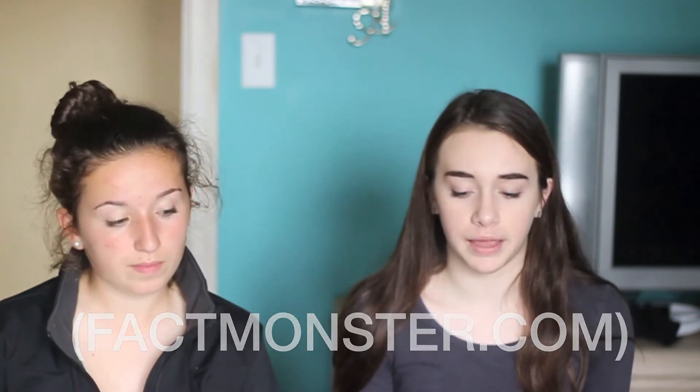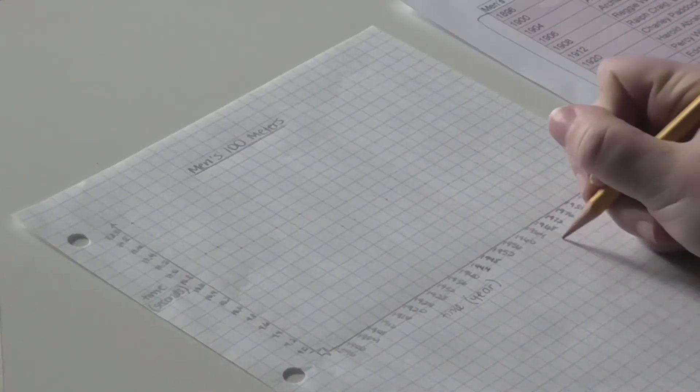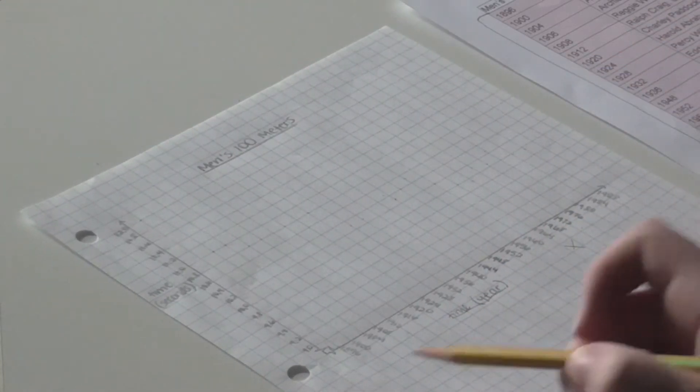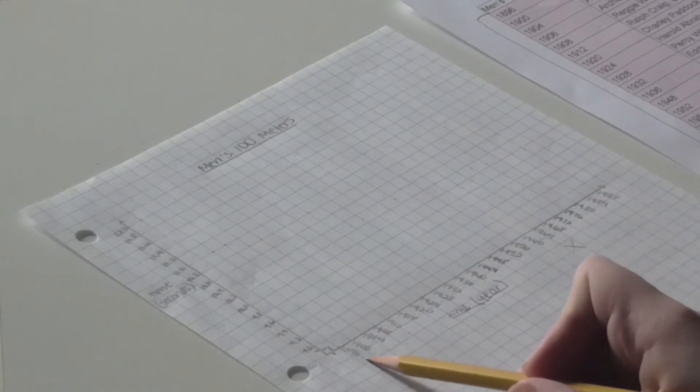To organize our data, we made a scatter plot using information we found on a table from online. Our independent variable that can be seen on the x-axis is time in years. This increases every four years starting at 1896.